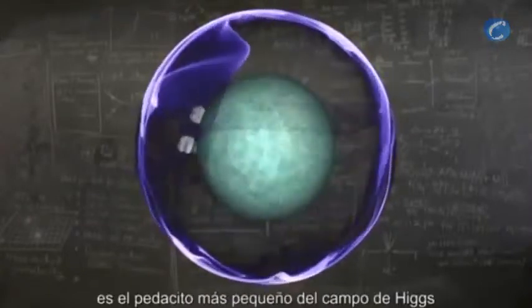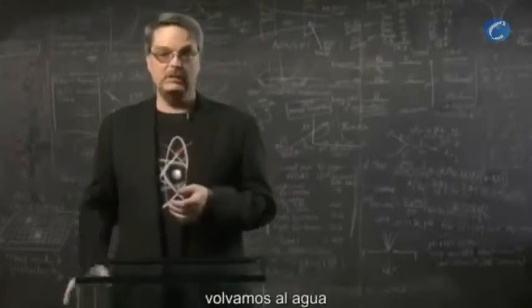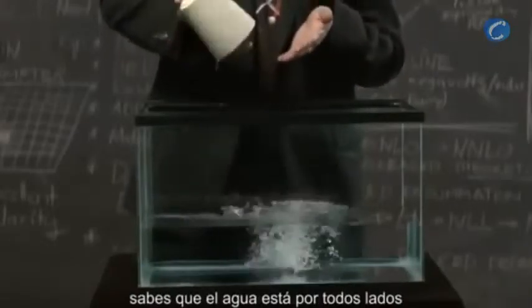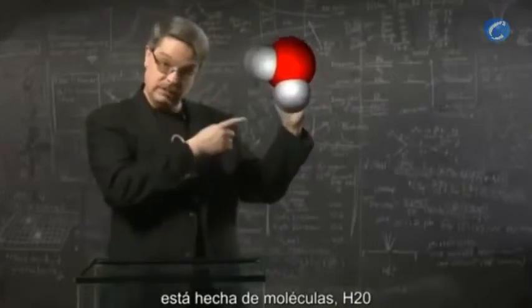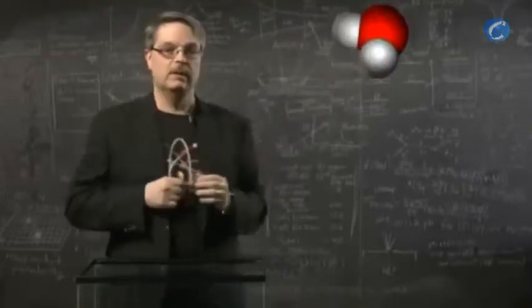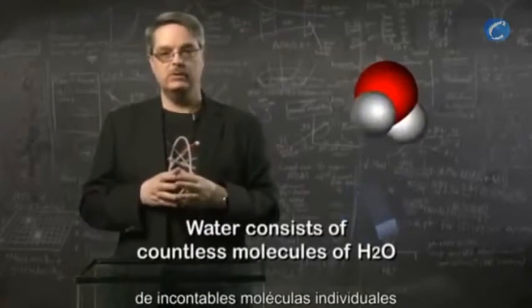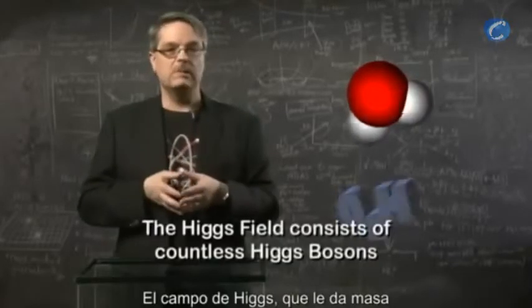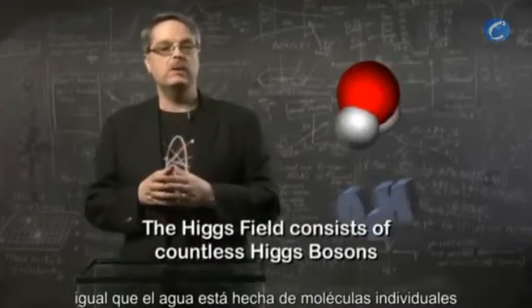The Higgs boson is the smallest bit of the Higgs field. To understand how that works, we should again return to water. Everyone knows what water is — if you're immersed in it, you know that water is everywhere; it's a continuous medium and there are no holes in it. We also know that water is made of molecules, specifically H2O. If you hold these two ideas in your head, with the realization that water consists of countless individual molecules, you can now begin to appreciate the Higgs boson. The Higgs field that gives subatomic particles their mass is made of countless individual Higgs bosons, just like water is made of individual molecules.